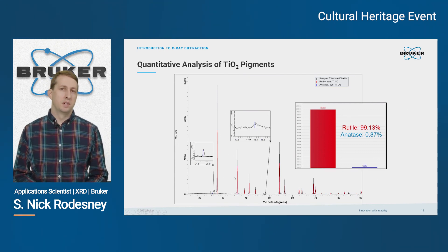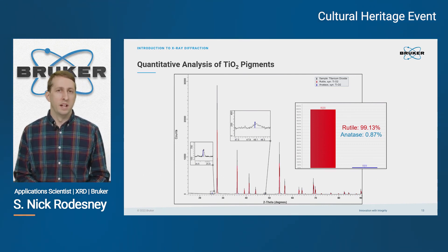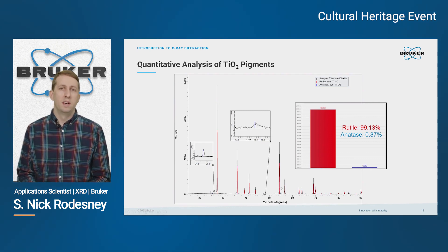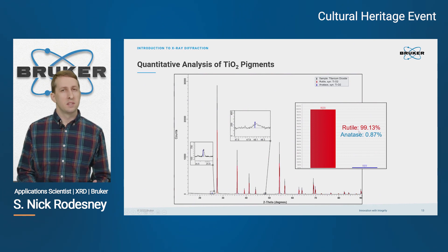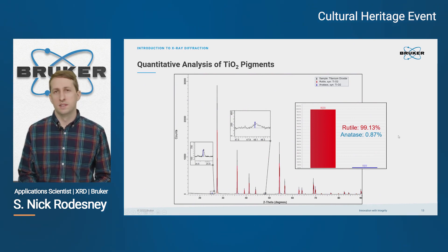For this particular example, we've done some semi-quantitative analysis, where we look at the heights of the peaks and do some calculations to quantify it. In this case, it's about 99% Rutile and about 1% Anatase.